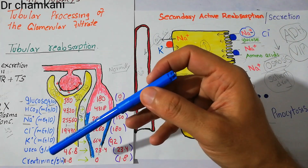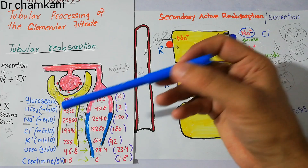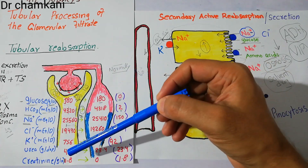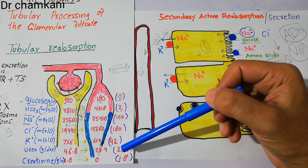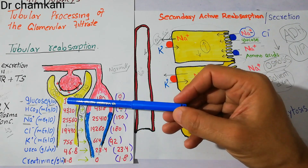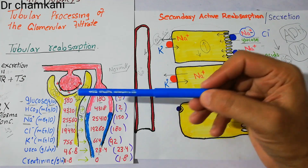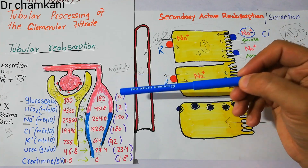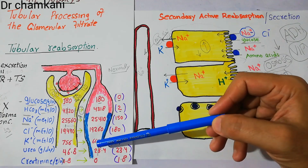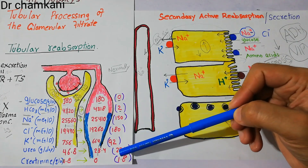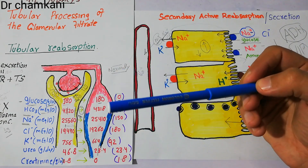Urea also gets reabsorbed through urea transporters and concentration gradient, but the reabsorption of urea from the proximal tubule into the peritubular capillaries is very low. Almost 23 grams of urea will be excreted in urine. For reference, 180 grams of glucose filtered per day is completely reabsorbed and the amount of glucose excreted in urine is 0%. But the amount of urea reabsorbed from the tubule into the peritubular capillaries is low, with only around 23 grams reabsorbed and the remaining excreted into urine.